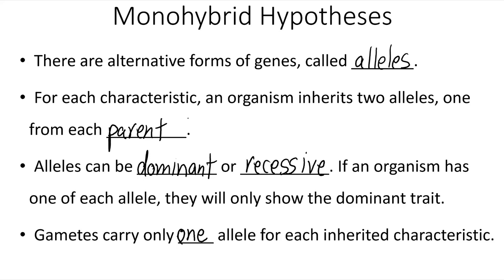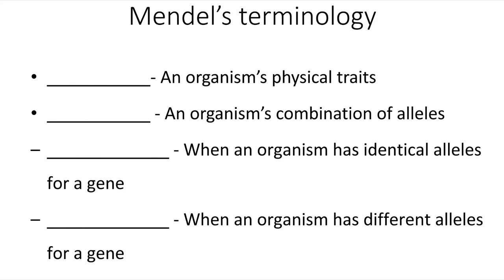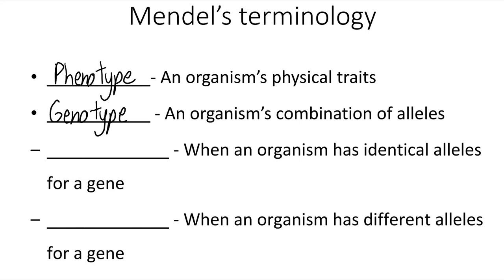There are a few terms to introduce so that we can discuss these genetic experiments. The first is phenotype. The phenotype of an organism is a description of its physical traits. If the pea plant has purple flowers or white flowers, that is its phenotype. If a human has blonde hair or brown hair, that is their phenotype. Genotype is a genetic description of an organism — it describes which alleles an organism has. If a pea plant has two copies of the purple flower color allele, that would be its genotype.